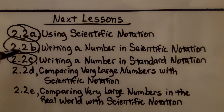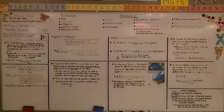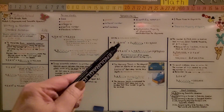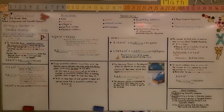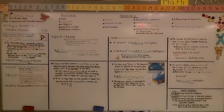We're finished with lesson 2.2c and moving on to 2.2d: comparing very large numbers with scientific notation. Remember: when going from scientific notation to standard notation, a positive exponent means we move the decimal point to the right. In the future, we'll discuss negative exponents, which move the decimal point to the left. Check out the description for the link about the Mariana Trench — it's really interesting. Hope you have a great day and join me for the next lesson. Bye!